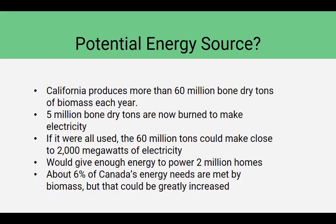California produces more than 60 million bone-dry tons of biomass a year. 5 million are now burned to make electricity. If we were to use all 60 million tons, we could make close to 2,000 megawatts of electricity, which would give us enough energy to power 2 million homes. About 6% of Canada's energy needs are currently met by biomass, but that number could be increased a fair amount.